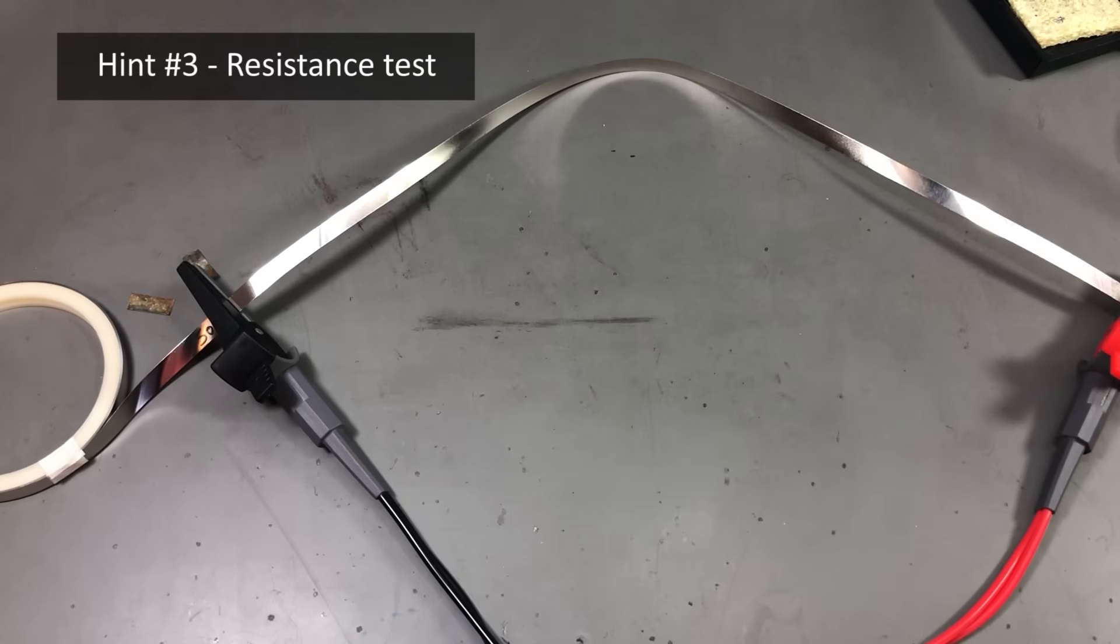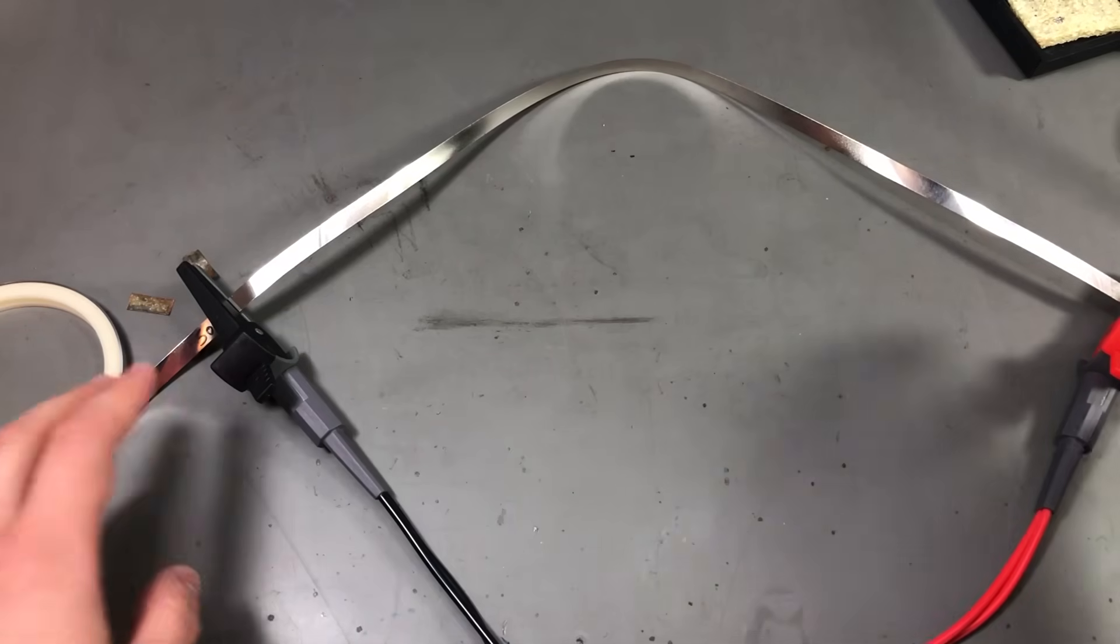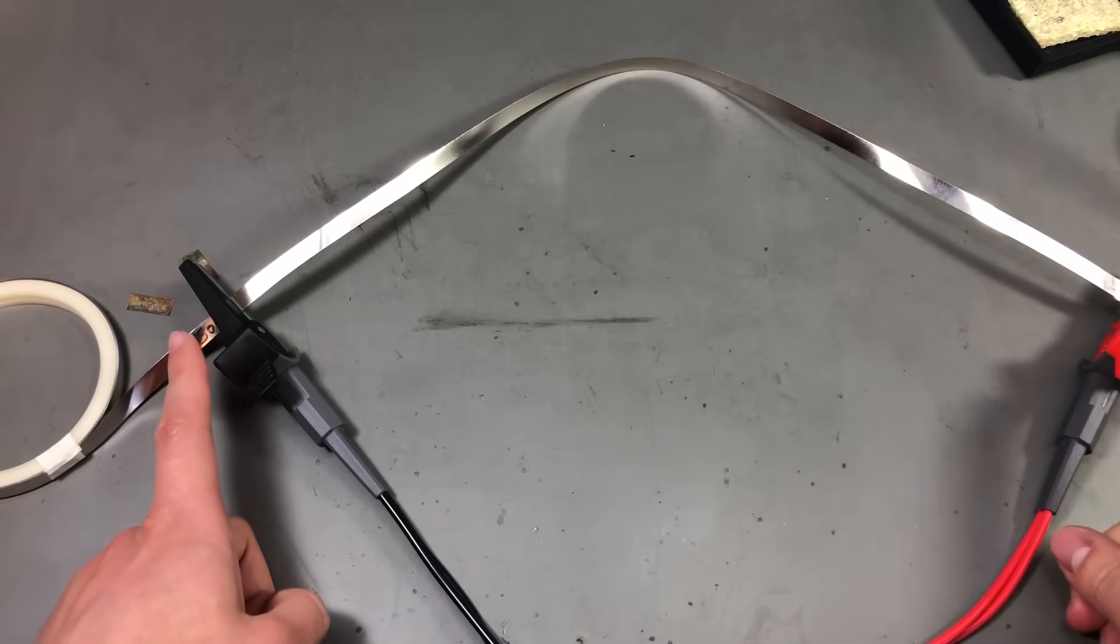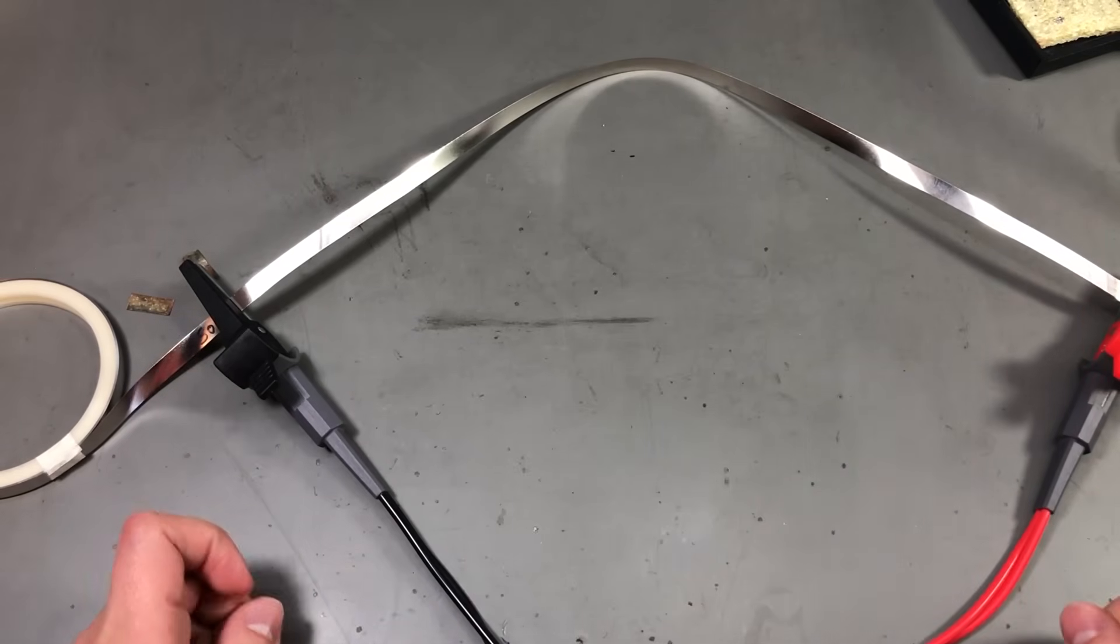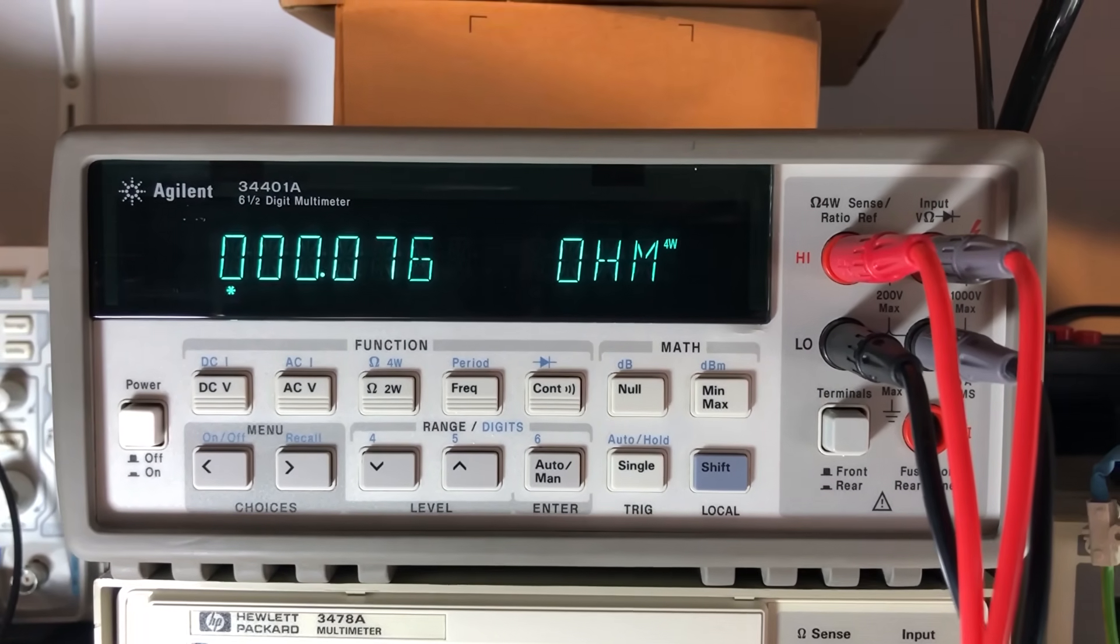The third test you can do is to measure the resistance of the strip over a known length and compare that with known specs of pure nickel strips with the same width and thickness as yours. You will need a high accuracy 4-wire ohmmeter to do this measurement like I'm using here. In my case, I am measuring over 50cm of this 8mm wide steel-plated nickel strip and I am getting 77 milliohms.